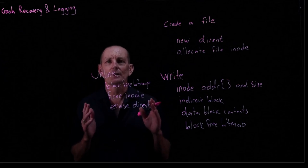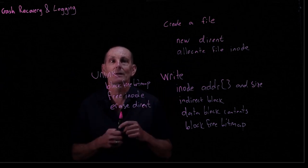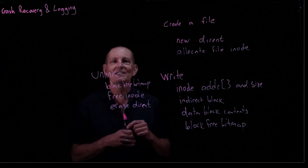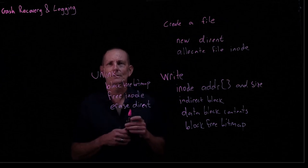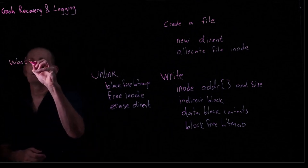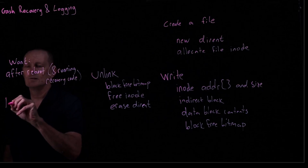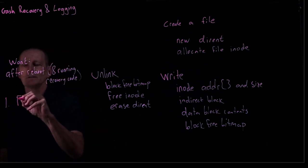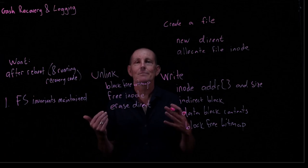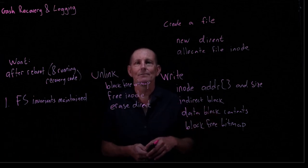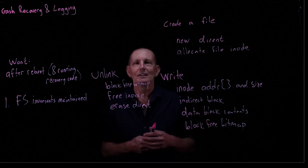So we want our, after a reboot, what we'd like, and after running some sort of a recovery code, we'd like our internal invariants to be maintained. What's an internal invariant? Well, let's do a simple one. That a block is not in both the free list and in a file. We want, after a reboot, and running recovery code, one, file system invariants maintained. What might be another file system invariant? Well, let's say the link count in an inode should match the number of directory entries that refer to that file. An inode should be marked as free only if there are links to it.